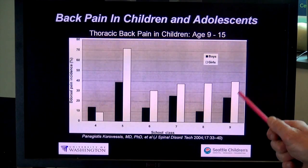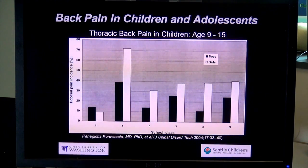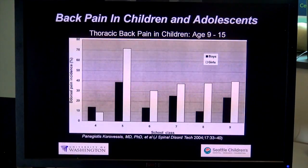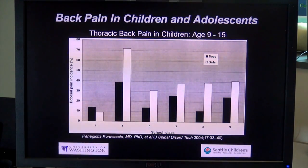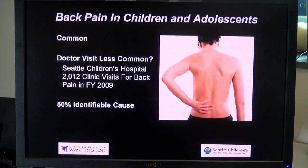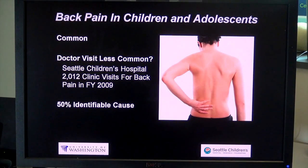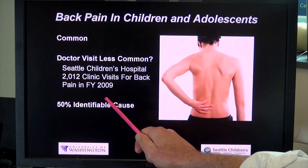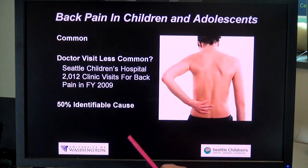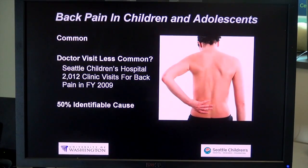Looking at thoracic back pain — something we don't think about typically — it's really common again in girls: 70%, 30%, 40%, 50%. These are really common issues. When doctors think back pain is rare and usually denotes a serious problem, it sways our thinking. We found that in one fiscal year, the Department of Orthopedics had over 2,000 clinic visits for back pain in children. In the past, it's been noted that 50% of the time we can find an identifiable cause — meaning 50% of the time we never do.